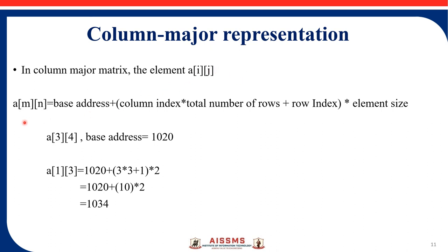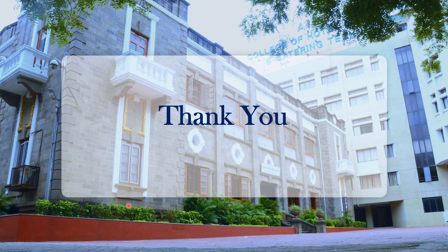Now for column major representation, the formula for element A of ij is: base address plus (column index × total number of rows + row index) × element size. In row major we used row index × total columns; here we use column index × total rows. For the same A of 3×4, base address 1020, at index A of 1,3: 1020 + (3 × 3 + 1) × 2 = 1034. The address at index A of 1,3 using both row major and column major representation is the same: 1034. Thank you everyone.